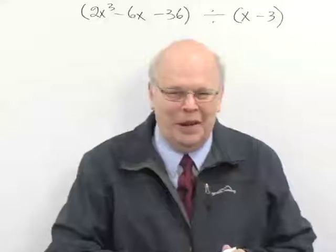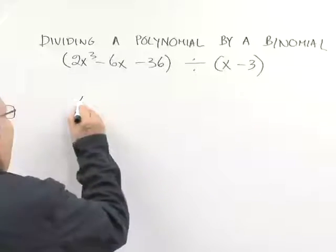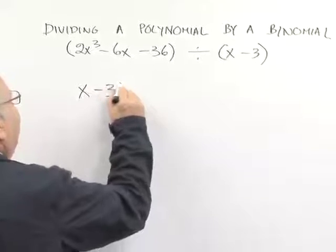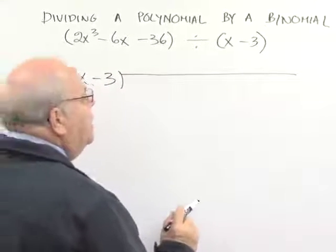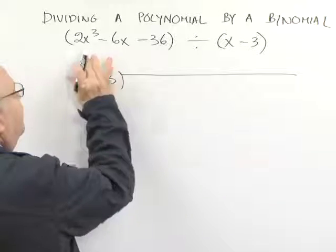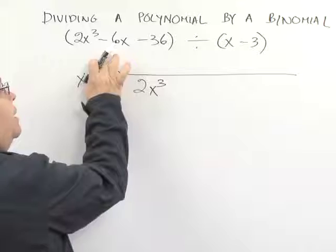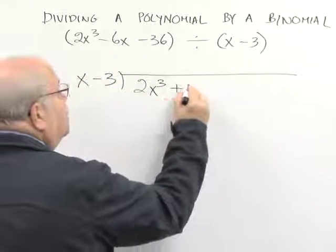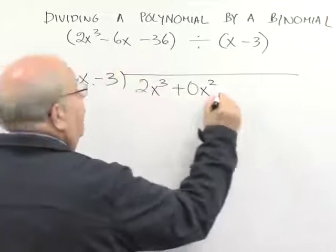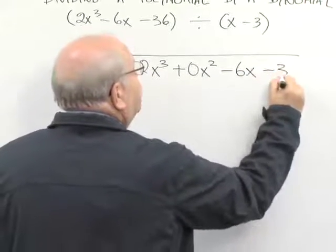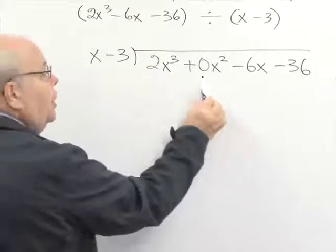Now this time we have to be very careful, so let's go over the steps and think about each piece. We need to divide x - 3 into a polynomial, but every single exponent has to be used. 2x³, there isn't any x², so we have to put in 0x², and then -6x and then -36.